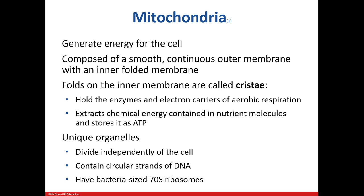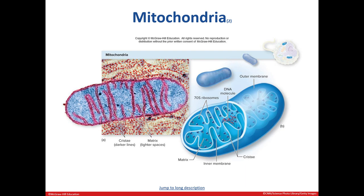The mitochondria is known as the powerhouse of the cell — it is where cellular respiration occurs to produce ATP. It also has special characteristics in that it contains circular DNA like a prokaryote, can divide on its own, and has its own ribosomes that are the size of a prokaryote rather than a eukaryote. Here we can see the double membrane that surrounds the mitochondria, its DNA, along with ribosomes.